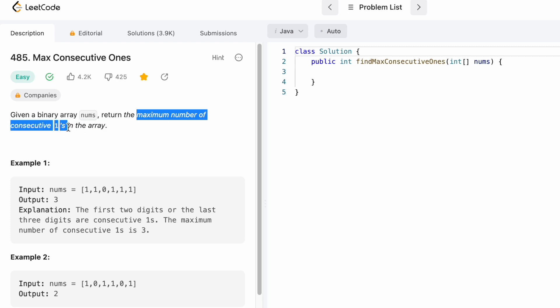In this example there are two consecutive ones, but there is also another set of ones which is longer than the previous set, having three consecutive ones, so we return that as the output.